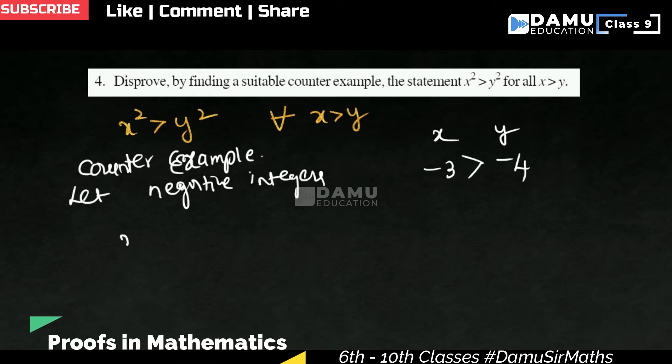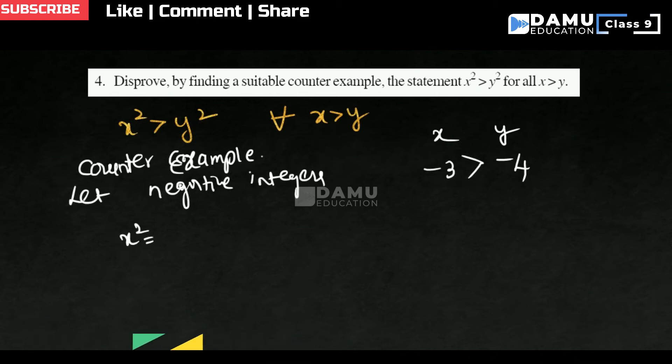Let's find x square. So x square is negative 3 whole square. Minus minus will be cancelled. It will become positive if you take square. 3 square is 9. Then y square, that is negative 4 whole square, 4 square 16.